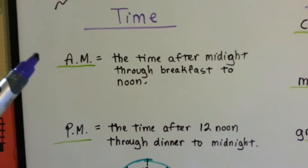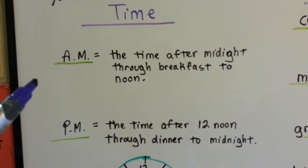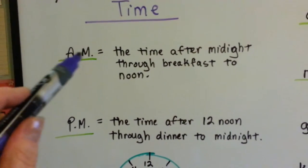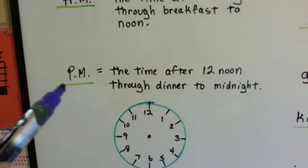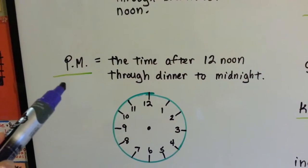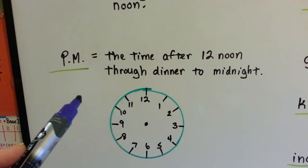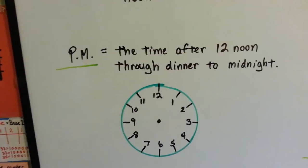So for time, a.m. is the time after midnight through breakfast to lunchtime at noon. It's considered the daytime. And then p.m. is the time after 12 noon, it's after lunchtime, through dinner to midnight. It's when the kids go to bed.